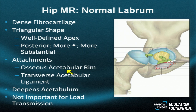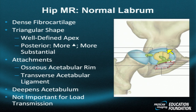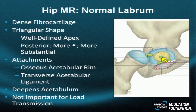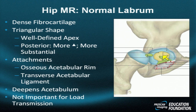The labrum attaches to an osseous acetabular rim, and this attachment is a very narrow zone of transition. There is also a narrow zone of transition between it and the adjacent hyaline cartilage. A transverse acetabular ligament closes the ring of the acetabulum; from it comes the ligamentum teres. The yellow color represents the pulvinar fat in the joint space. The labrum deepens the acetabulum and is relevant for subtle movements of internal and external rotation, abduction, and adduction.